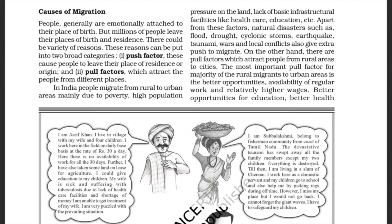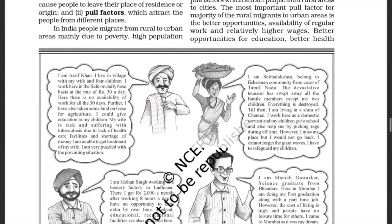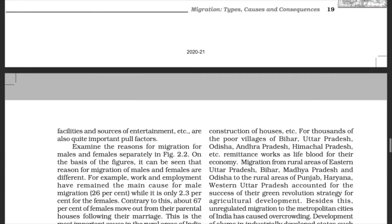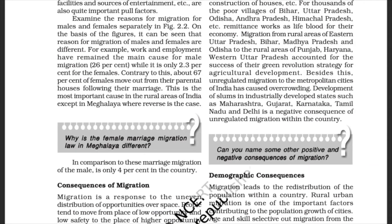On the other hand, there are pull factors which attract people from rural areas to cities. The most important pull factor for the majority of rural migrants to urban areas is better opportunities, availability of regular work, and relatively higher wages. Better opportunities for education, better health facilities, and sources of entertainment are also quite important pull factors.